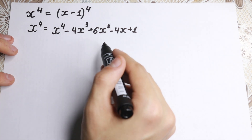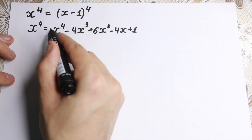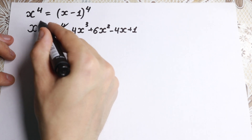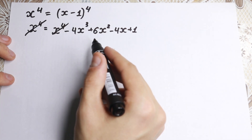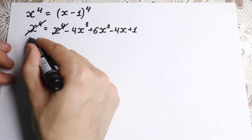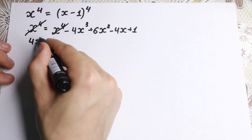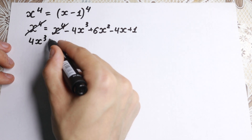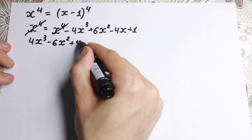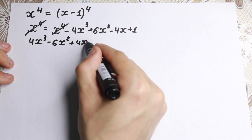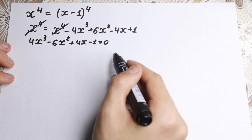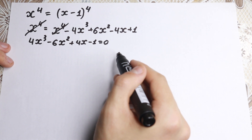Now, x to the fourth appears on both sides, so we can cancel it. This is really great because we're left with a cubic equation: 4x cubed minus 6x squared plus 4x minus 1 equals zero.